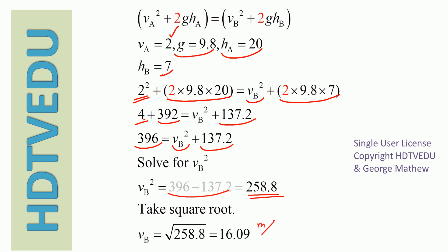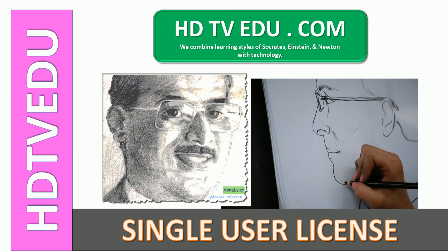Speed at B equals the square root of 258.8, which is 16.09 meters per second. Why did the speed go up as the object came down? As height reduces, potential energy decreases, so kinetic energy has to increase — there is no energy loss due to friction. This is George Matthew signing off. Good luck.